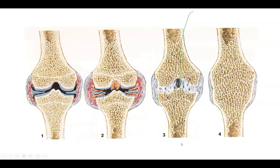This is a picture from the Netter Atlas. Early stage shows inflammation on the sides with the joint capsule, then more inflammation and pannus. In some cases, it can lead to ankylosis of the joint.